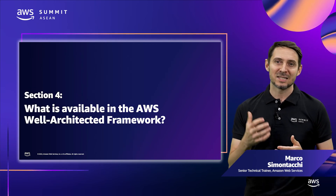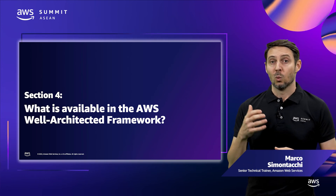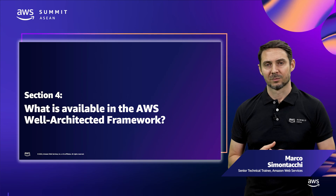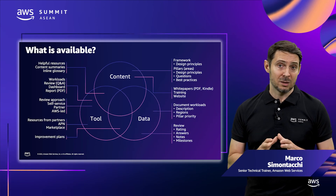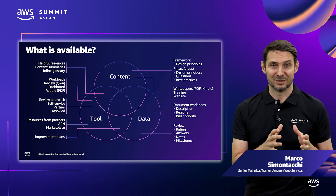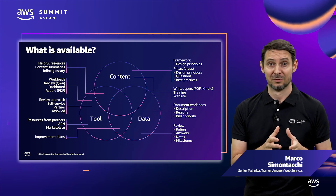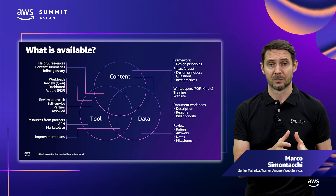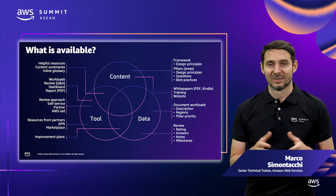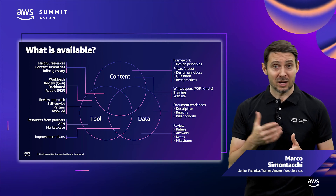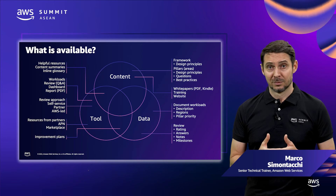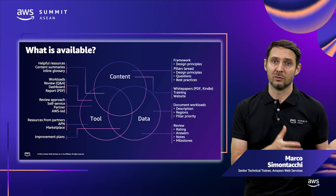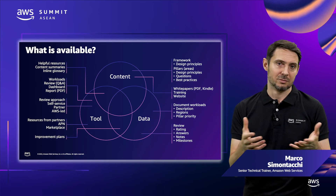Finally, let's have a look at what is available in the Well-Architected Framework. There are three main parts: Content — the framework itself, including white papers and the Well-Architected website. Tool — which uses the framework to carry out reviews. And Data — the information you have from the reviews, including reviews and milestones.